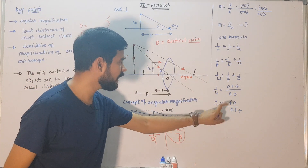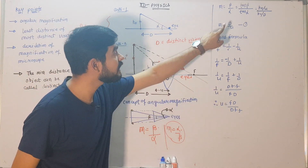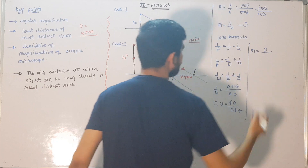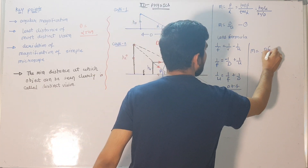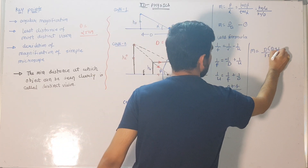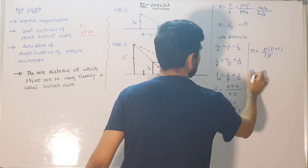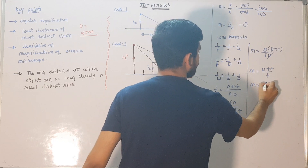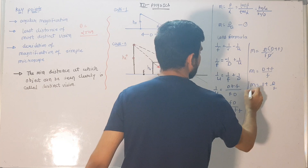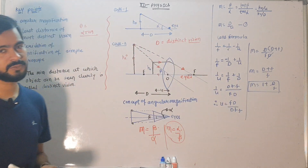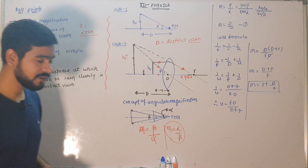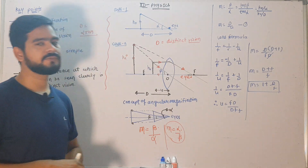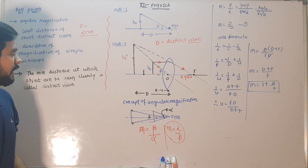Now substituting the value of U into equation 1: M = D/U = D divided by (FD/(D+F)). D and D cancel, giving M = (D+F)/F. Splitting the fraction: M = 1 + D/F. So this is the main formula for magnification of a simple microscope: M equals 1 plus D upon F, where D is the least distance of distinct vision and F is the focal length.